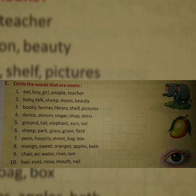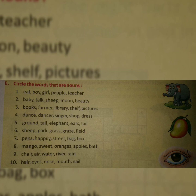Circle the words that are nouns. Number one: eat, boy, girl, people, teacher. I am going to solve this one and the rest you have to do on your own. You have to circle boy, girl, people and teacher. So I have solved this one for you.